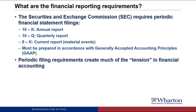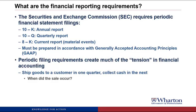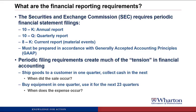These periodic filing requirements create much of the tension in financial accounting. For example, let's say we ship goods to a customer in one quarter, but we collect cash in the next quarter. When did the sale occur — when we shipped the goods or collected the cash? Or say we buy some equipment in one quarter and use it over the next 23 quarters. When does the expense occur? A lot of what we're going to do in this course is figure out what quarter to put various business activities into when we put together the financial statements.